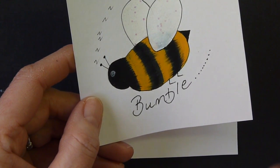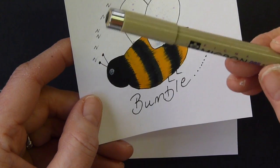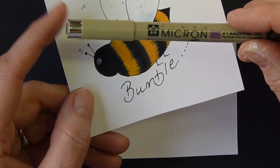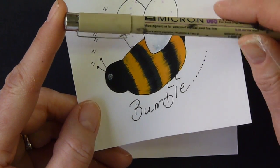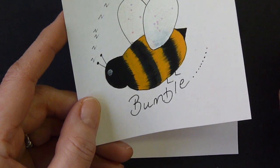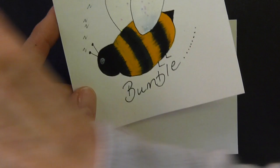And I've used also to go around the edge, a 005 Pigma pen, which is like a black Pigma ink pen. So it's waterproof. It won't run and it dries very quickly. So let me show you how to draw a bumblebee.